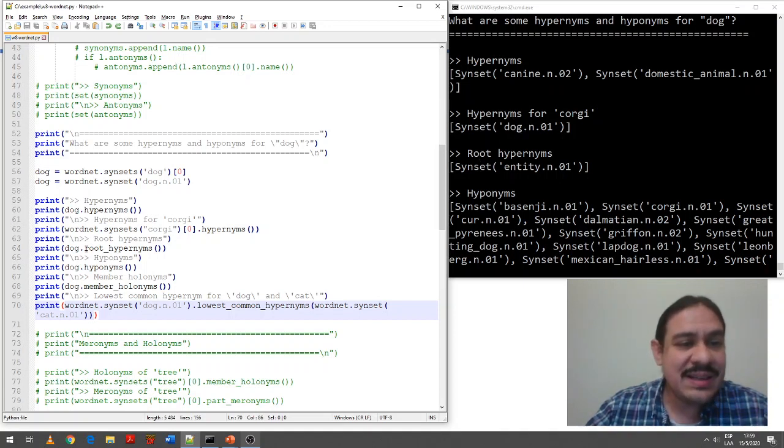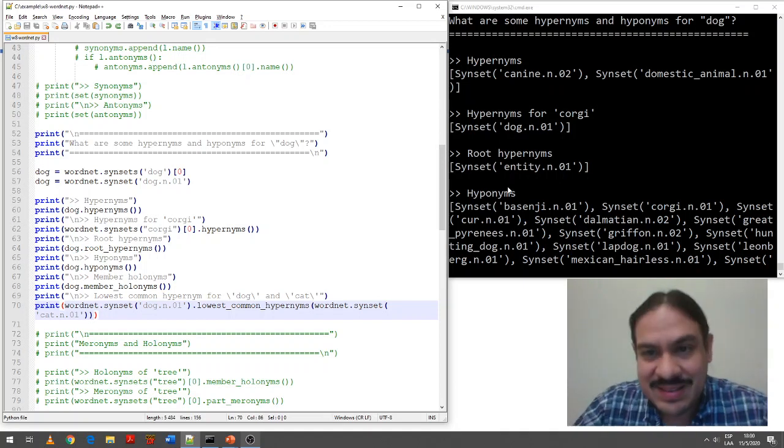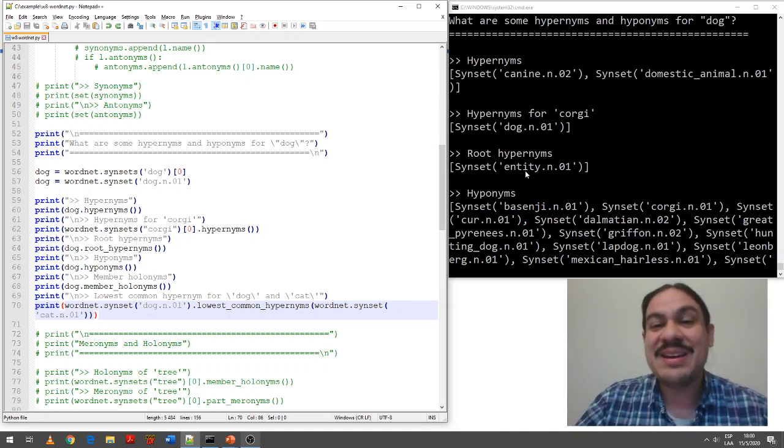And as you can see, it has many other relationships, like many finer gradations of the relationships. It has something called root hypernyms, which is like the highest possible category that something can belong to. So, dogs are canines for sure, but the ultimate thing that they are in the system is entities. This is the root hypernym for dog, a kind of entity.